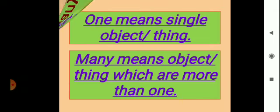Now, one means a single object or thing, and many means objects or things which are more than one. When things are more than one, we say many things. When things are a single number, we say one thing.